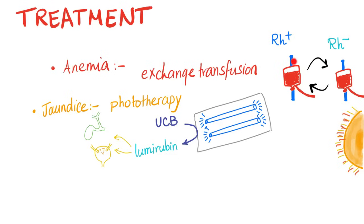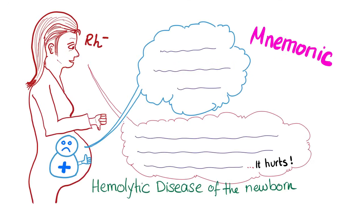We do this to prevent kernicterus, which can be very bad. If there is jaundice, we do phototherapy — blue fluorescent light — to convert the unconjugated bilirubin into water-soluble lumirubin, which can be excreted in bile or urine. Note: this is not conjugation. If the hospital doesn't have this blue fluorescent light, we can use natural sunlight.